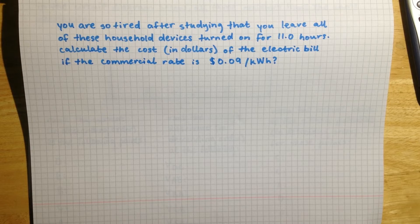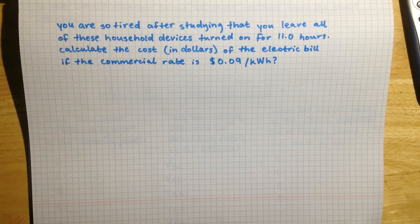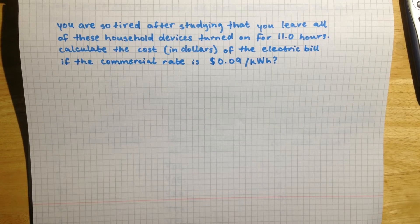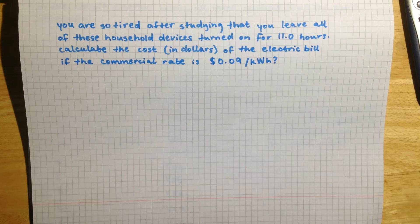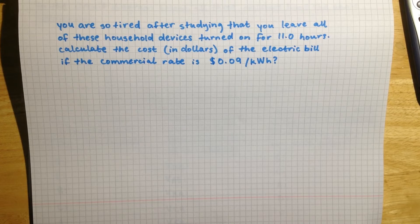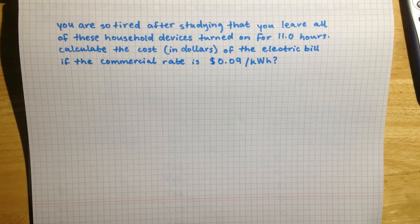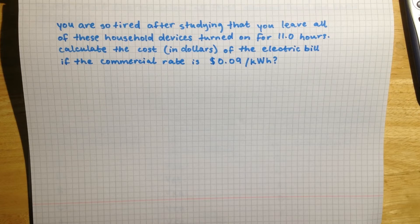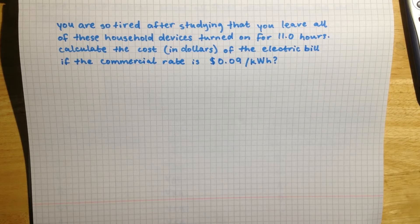And there is a third part to this question, so let's go ahead and read it. You are so tired after studying that you leave all of these household devices turned on for 11 hours. Calculate the cost in dollars of the electric bill if the commercial rate is 9 cents per kilowatt hour.